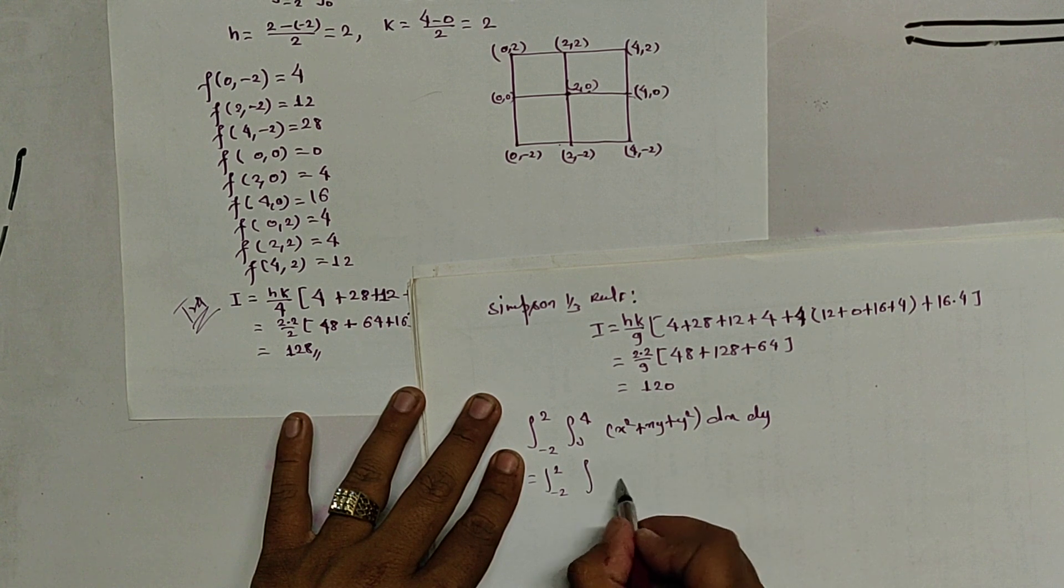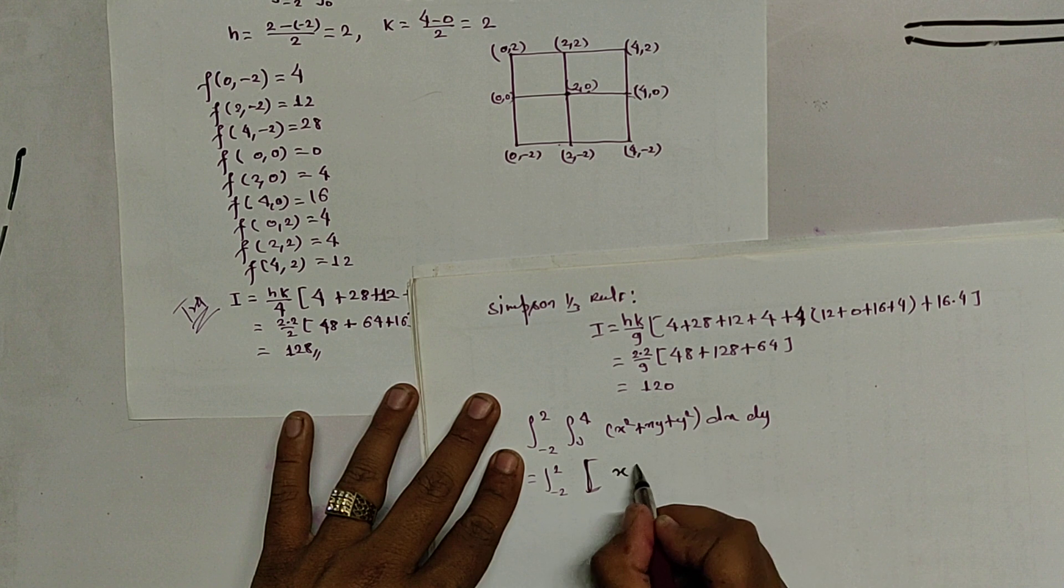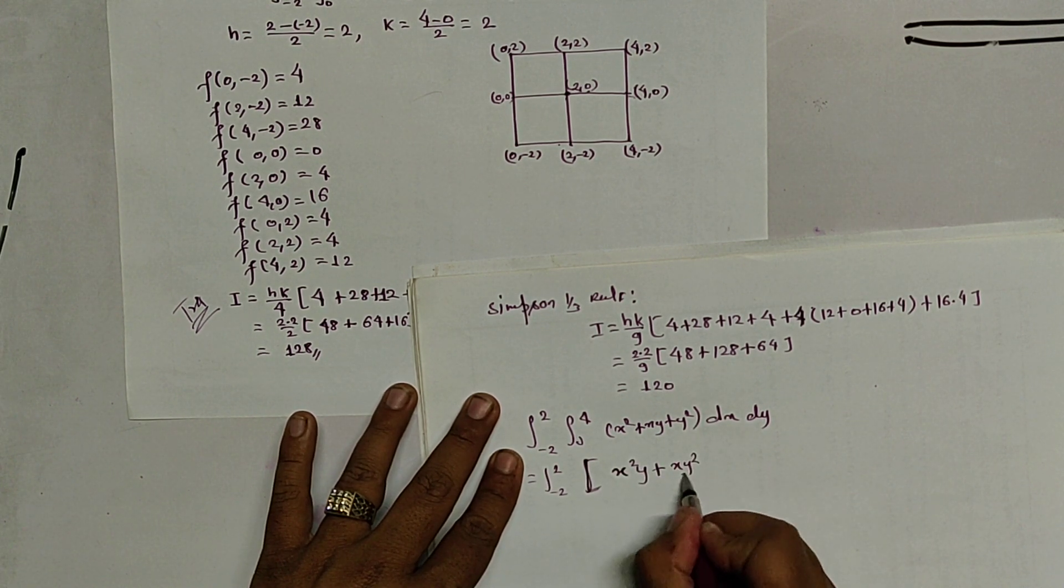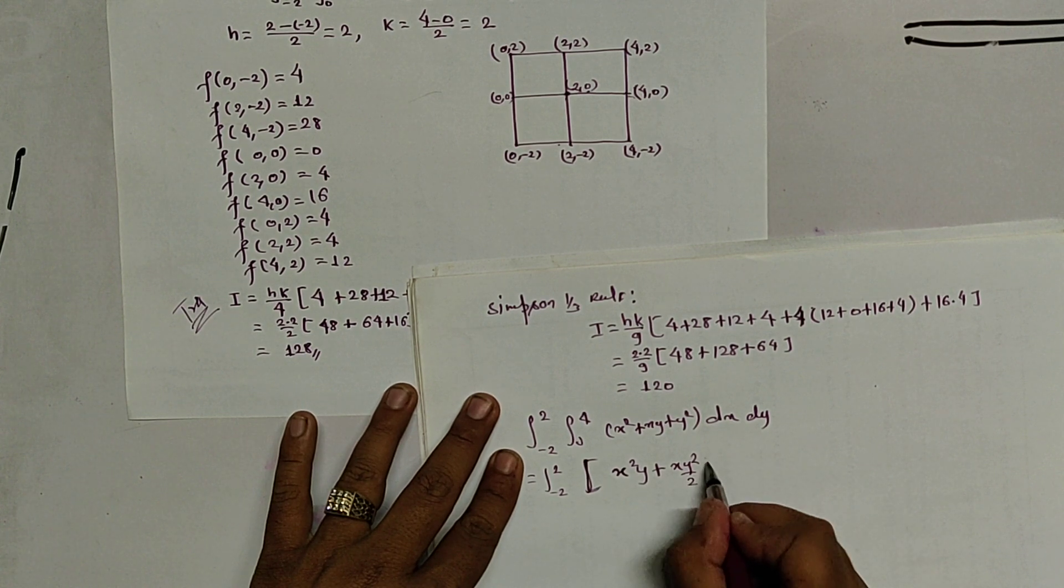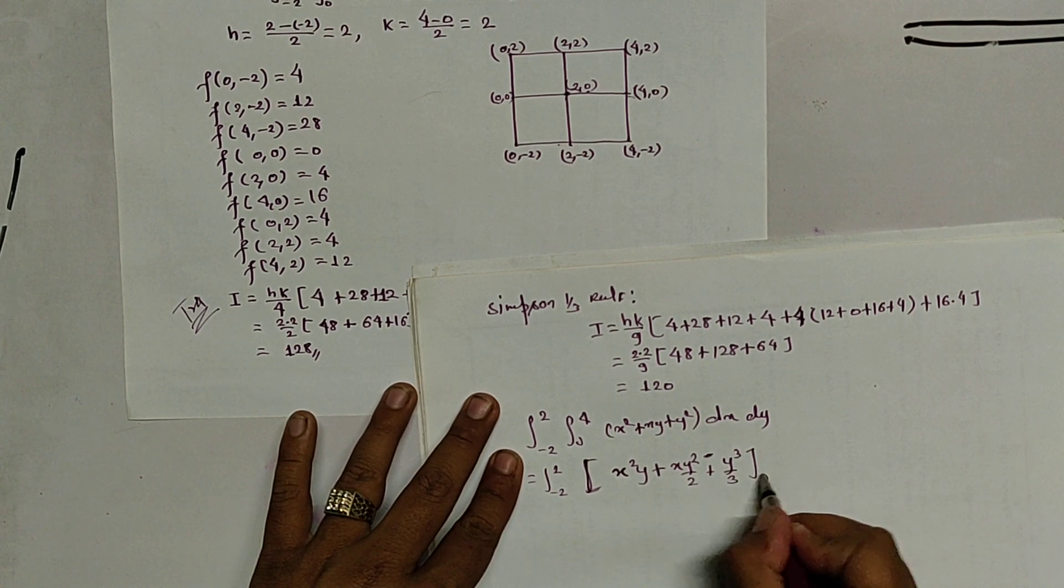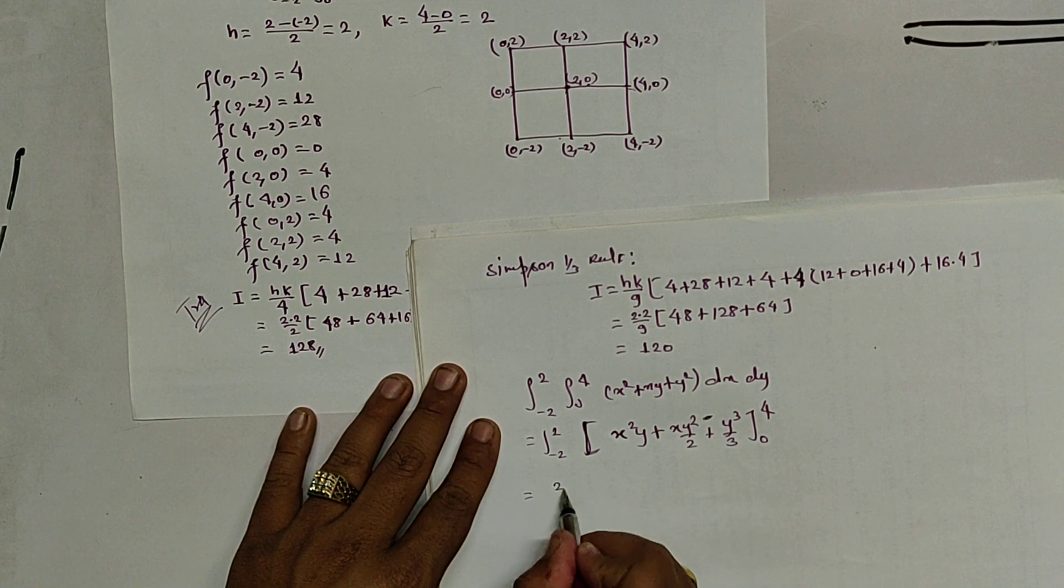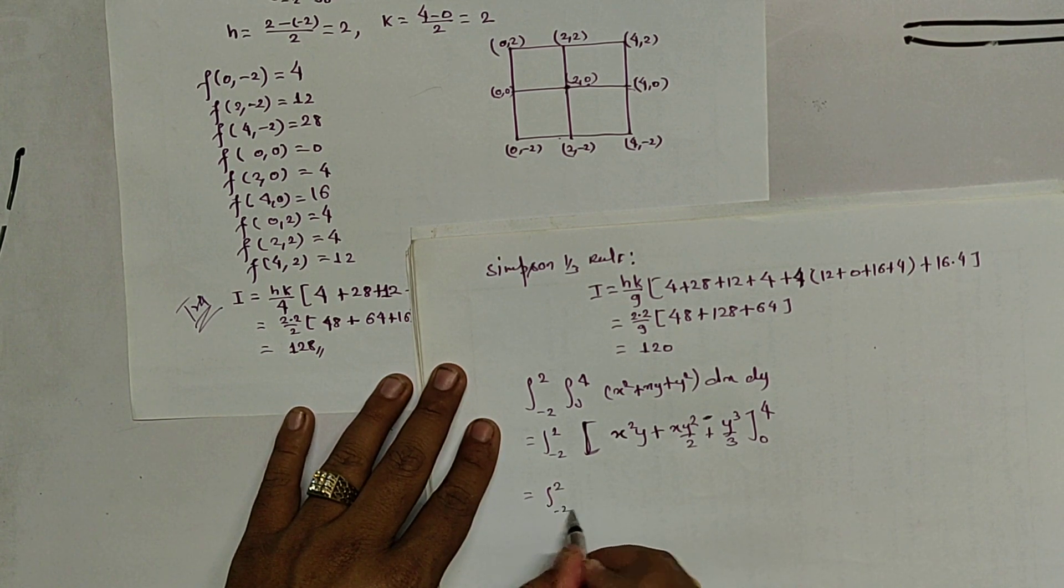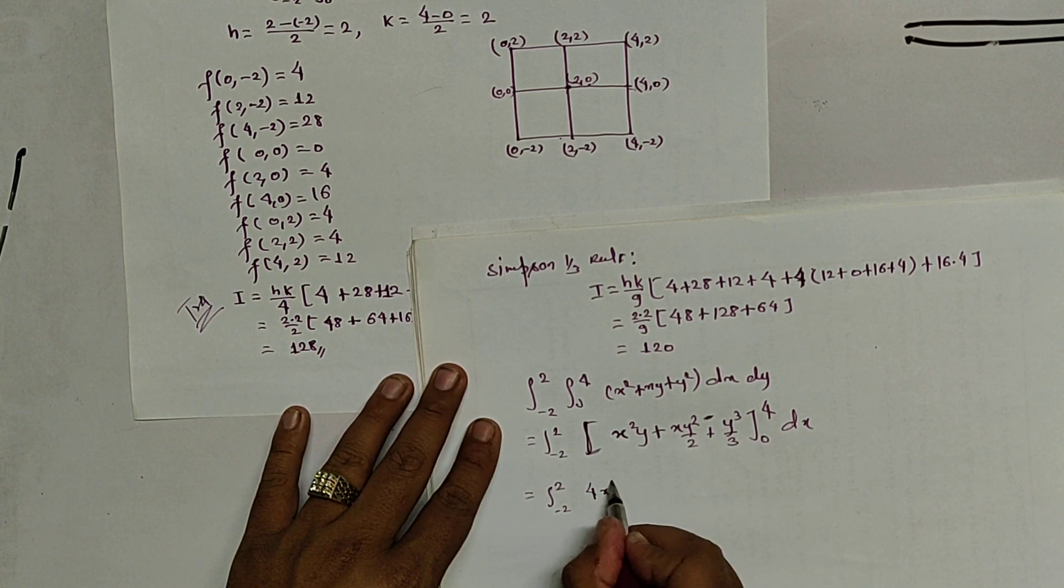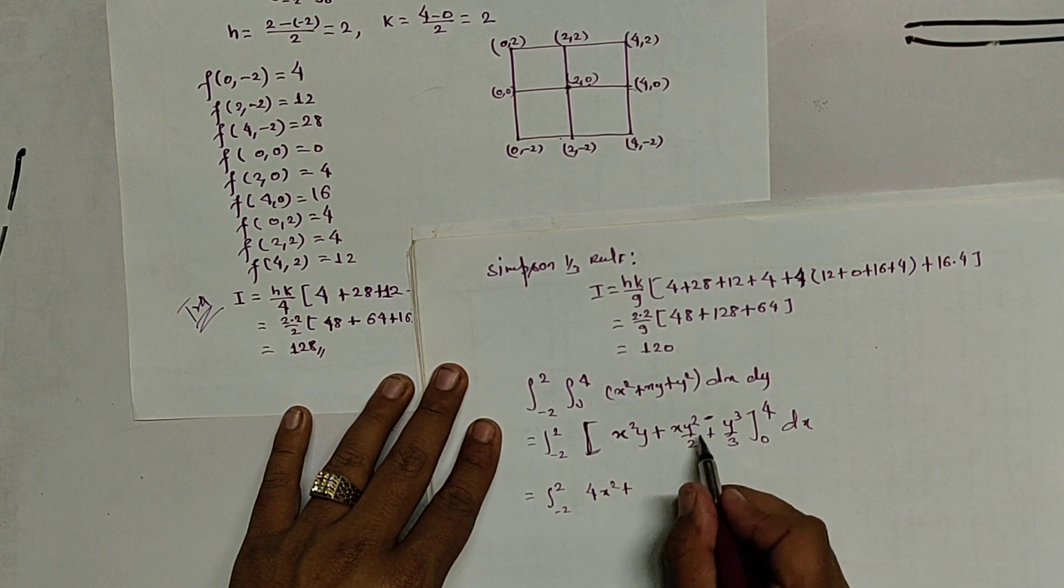What we get, x squared is, we get it at x square y plus x y square by 2 plus y cube by 3. 0 to 4. Similarly, 2 minus 2 dx here.